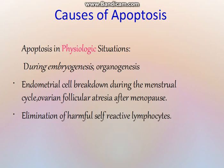Going to the causes of apoptosis, it can be seen in physiological as well as pathological conditions. In physiological conditions, it occurs during embryogenesis, organogenesis, during the menstrual cycle there is endometrial cell breakdown, after menopause there is ovarian follicular atresia, and also for the elimination of self-reactive lymphocytes which can lead to autoimmune diseases.